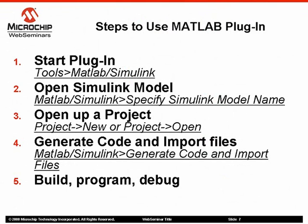Select Tools > MATLAB Simulink from the main menu. The MATLAB Simulink option will then be added to the main menu. Select MATLAB Simulink > Specify Simulink Model Name to specify the Simulink model to be opened for code generation. Open up a project, either fresh or an existing one — the generated code will be added to this project. Click on Generate Code; the plugin will generate code through Real-Time Workshop Embedded Coder. Click on Import Generated Files; the plugin will include all the generated files into the active project.